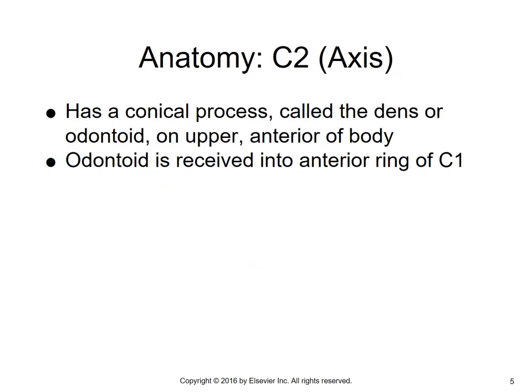For C2, it has a conical process called the dens or the odontoid on the upper anterior portion of the body. The odontoid is received into the anterior ring of C1. So where the body would normally be on C1, you have the odontoid process.